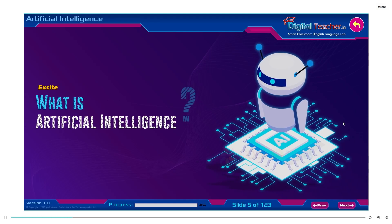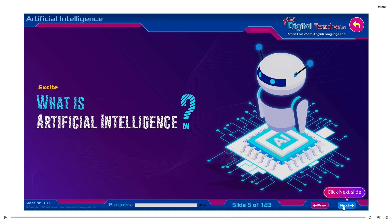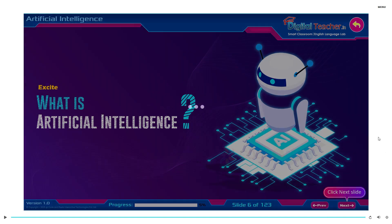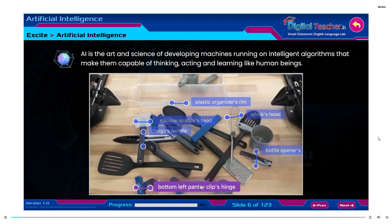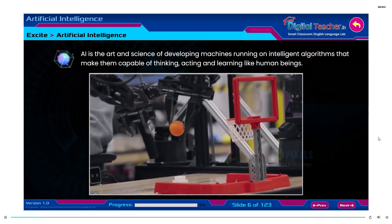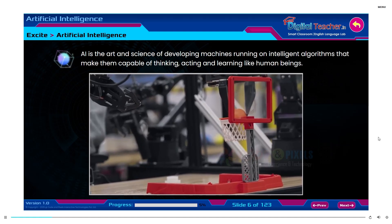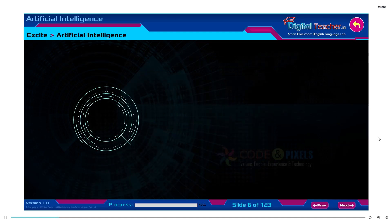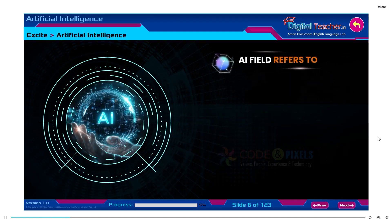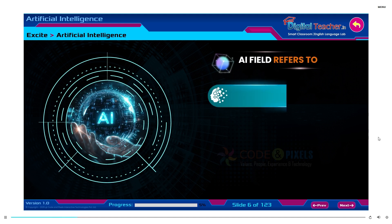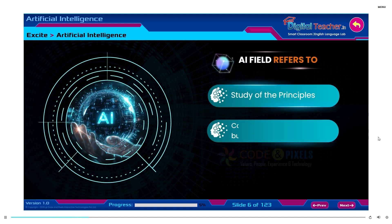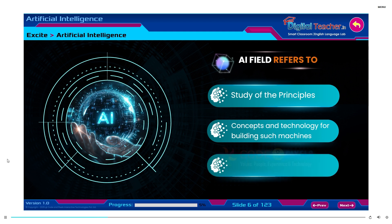What is artificial intelligence? AI is the art and science of developing machines running on intelligent algorithms that make them capable of thinking, acting and learning like human beings. The AI field refers to the study of the principles, concepts and technology for building such machines and systems that should think, act and learn like humans.